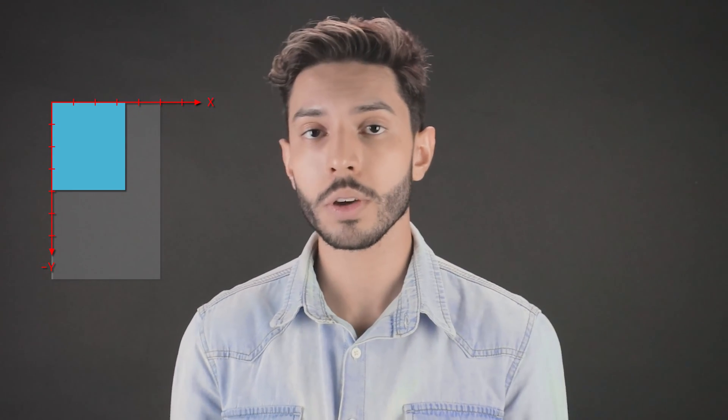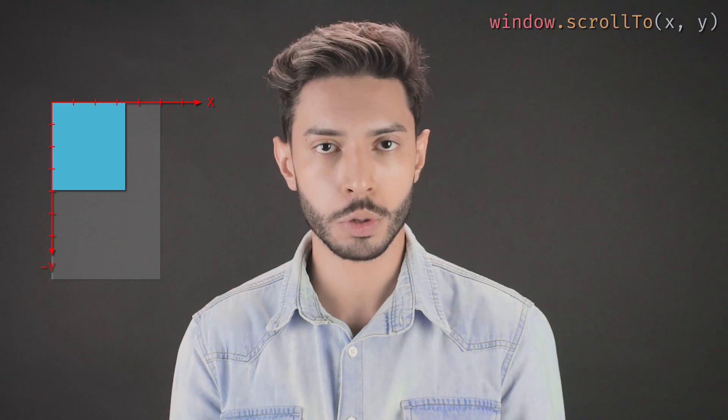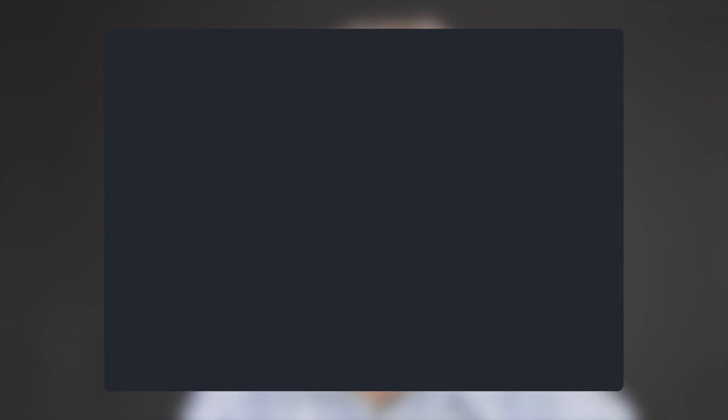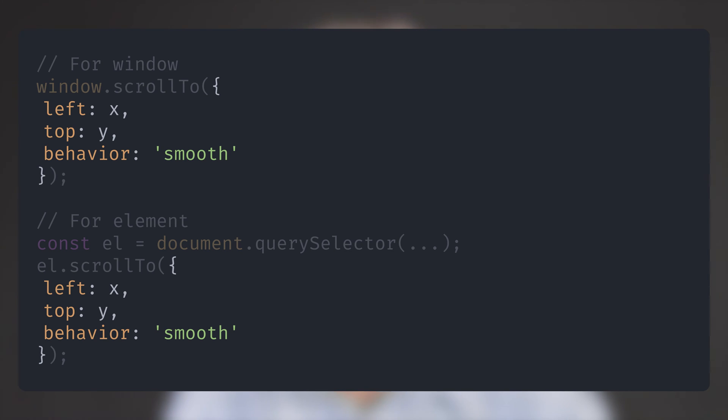window.scrollTo and element.scrollTo are ideal for scrolling to absolute coordinates. If you have the x and y coordinates for where you want to scroll the user to, you can simply call window.scrollTo, give it x and y, and it will respect the CSS scroll-behavior of the page. The same applies for scrollable elements — call element.scrollTo, give it x and y, and it will respect the CSS scroll-behavior of the element. There's also a new signature for this method which uses an object instead of two numeric arguments, and with this new signature we can explicitly set our scroll behavior.